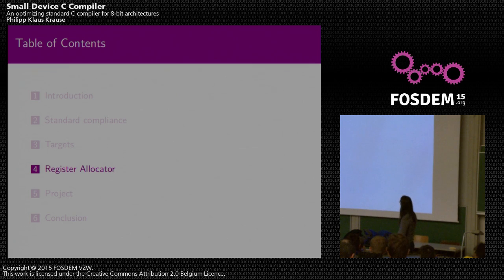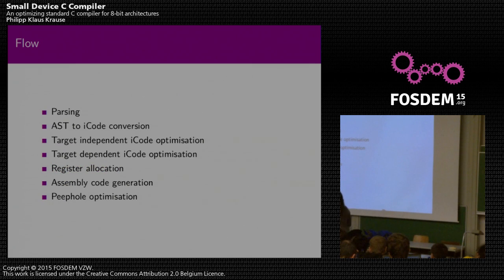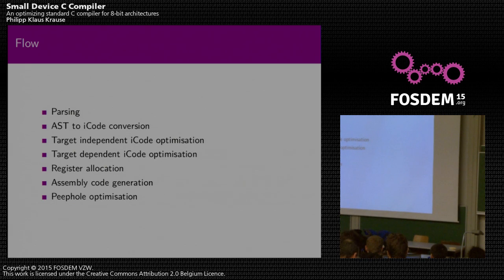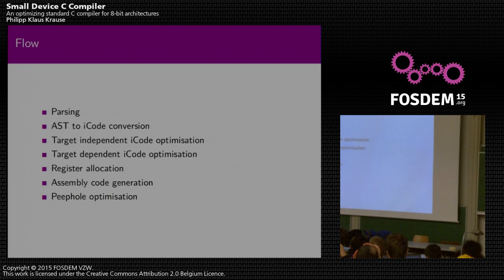Before jumping into the register allocator in detail, here's a quick overview of the compilation flow. Code goes through a preprocessor, then into an abstract syntax tree, which is converted to intermediate code. On that, we do target-independent optimizations, then target-dependent optimizations, then register allocation, then assembly code generation, and finally a peephole optimizer. SDCC can dump a lot of intermediate information — there's a compiler flag to output all this information as comments in the resulting assembly file. For the peephole optimizer, you can also add your own custom peephole rules.